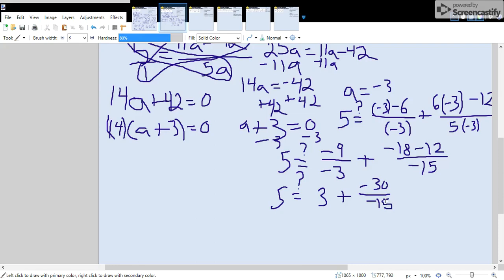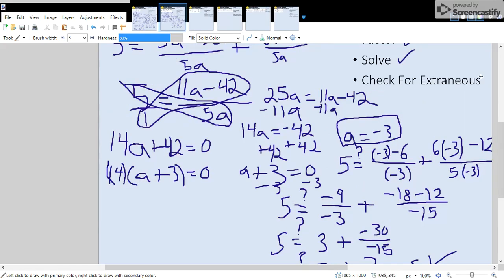we have is 5 equal to 3 plus negative 30 over negative 15. And negative 30 divided by negative 15 is a positive 2. So now we have is 5 equal to 3 plus 2. 3 plus 2 is 5. So yes, that works. That is a real solution. So our only solution is a equals negative 3. So now we're done with step seven, and we can go on to the next example.